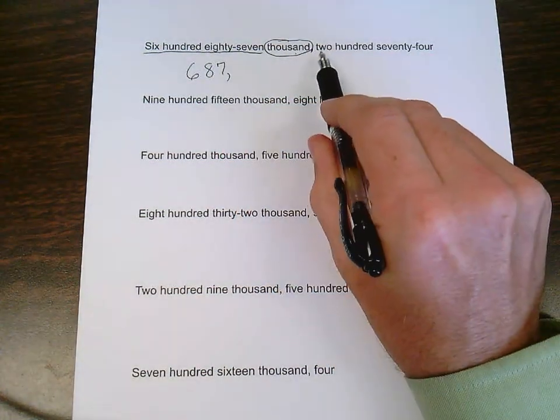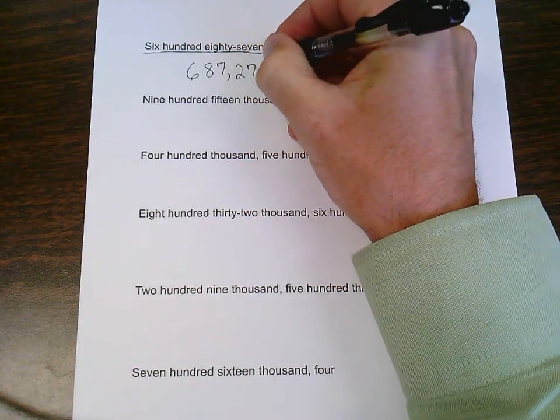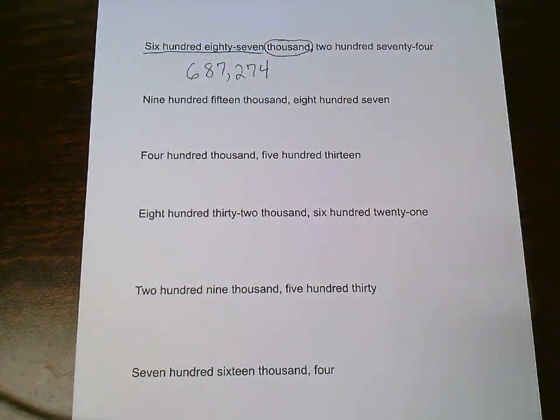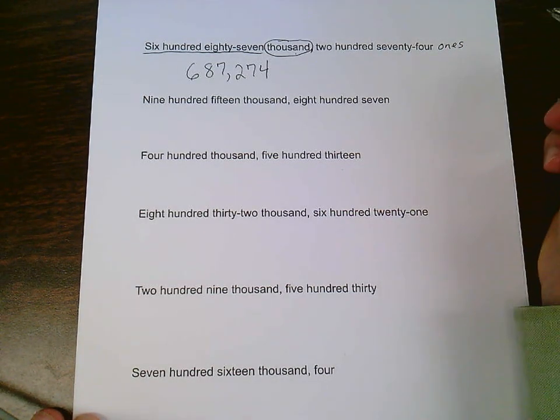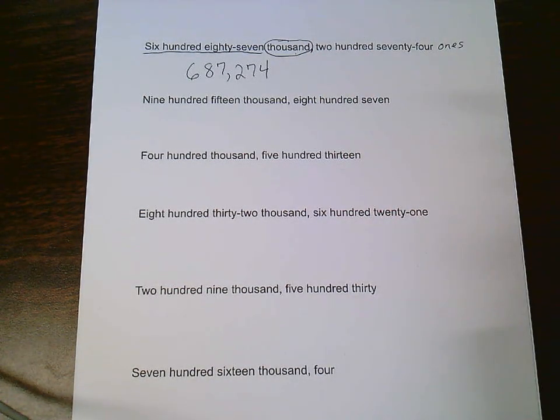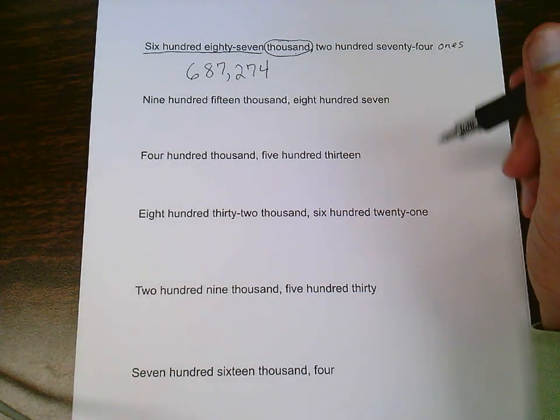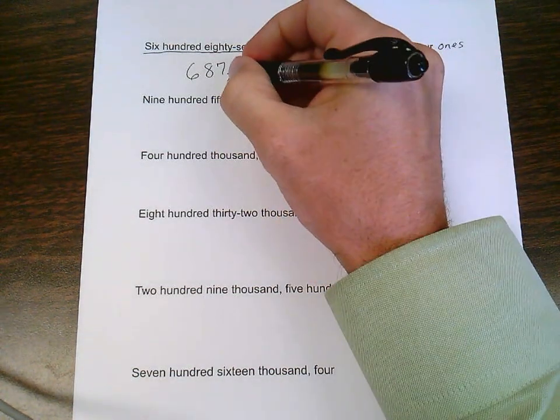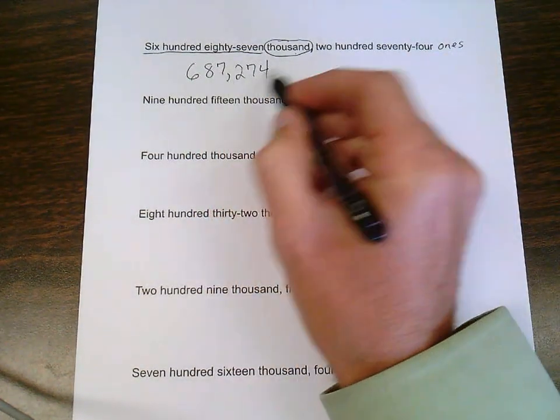And then after that it says 274. Now, the ones period never has its last name. All the other periods will say its last name before the comma. And every period has three digits in it and all periods are separated by a comma. So this comma will separate those periods, thousands period, ones period.